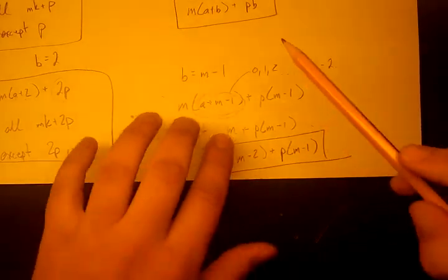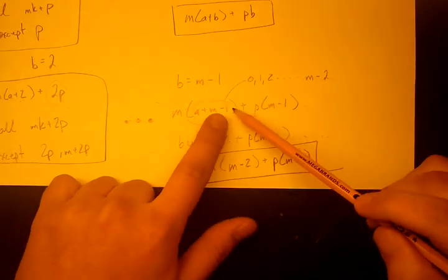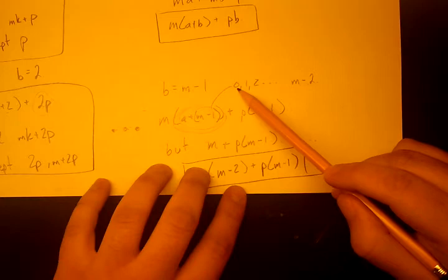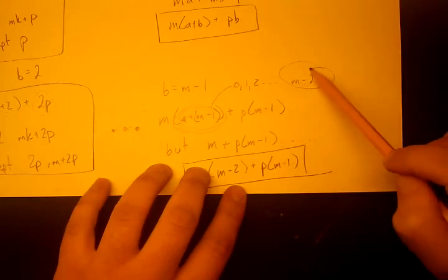So let's just recap what we did here. So a + m - 1, this is actually in a group. It can't take, it can't be zero, can't be one, can't be two, dot dot dot. It can't be m minus two.